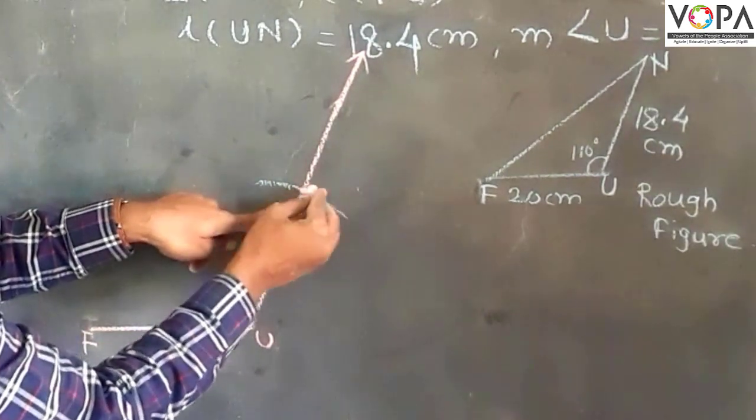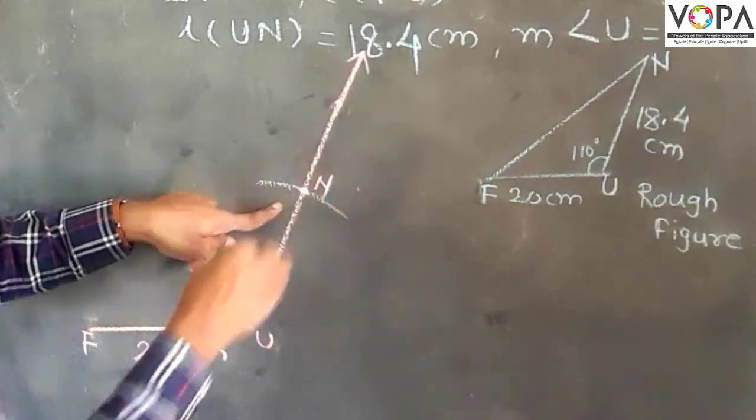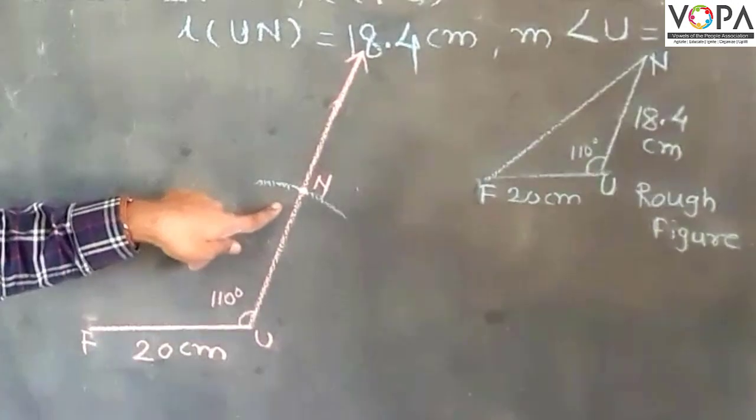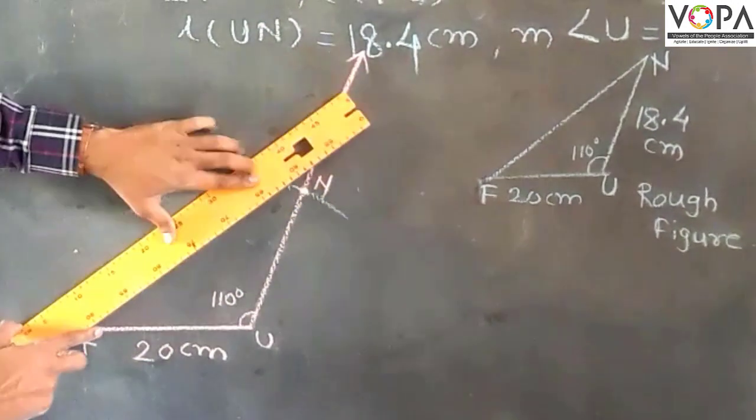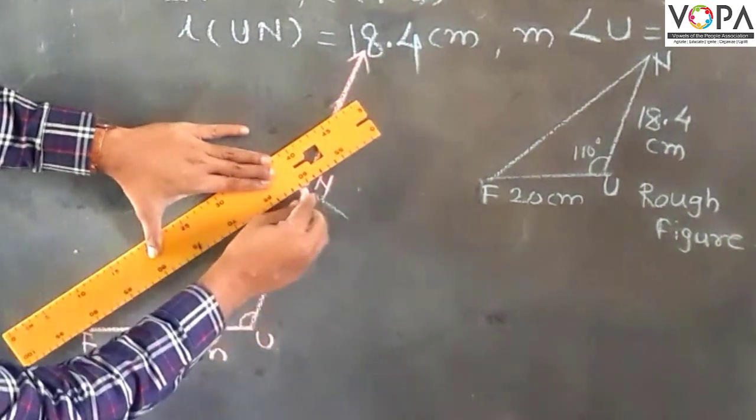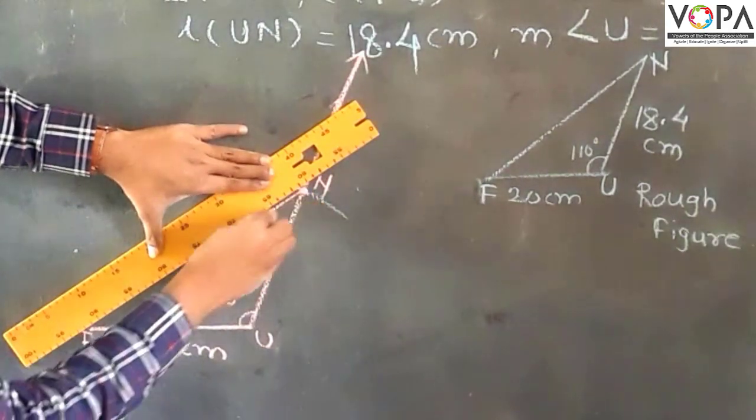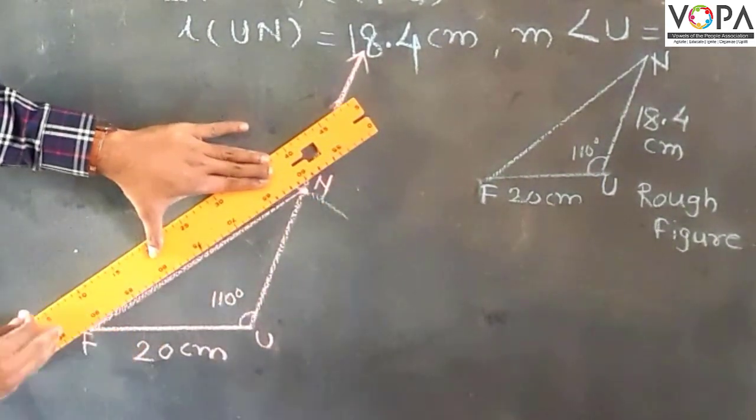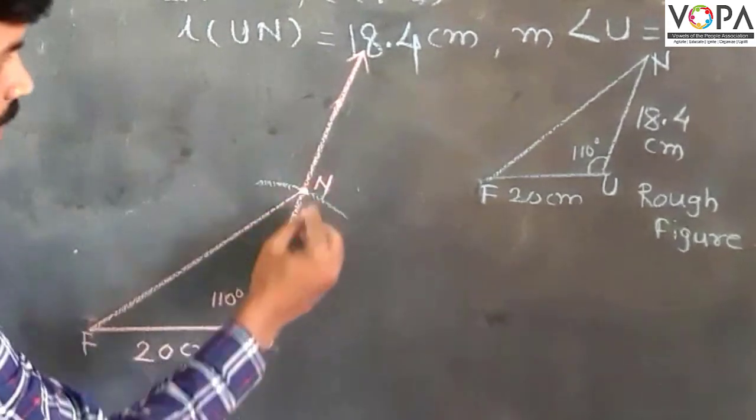Here is the intersection point of the arc and the other side of the triangle. This is point N. Get the ruler and join F and N, which are the two vertices of the triangle.